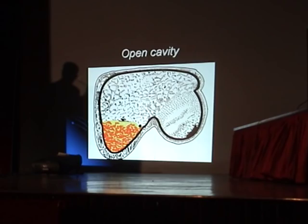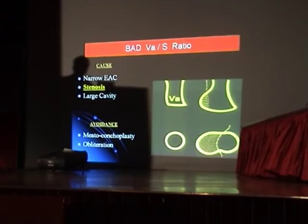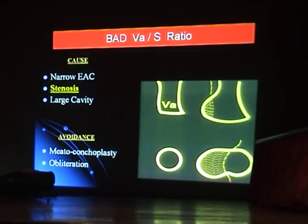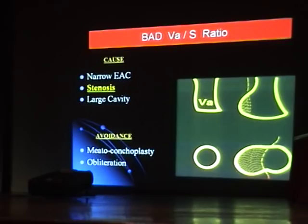Another thing not often taught is the VA upon S ratio — the volume of air circulating in the ear relative to the surface area of the ear canal skin. If there is meatostenosis, a meatoplasty or meatoconcoplasty is needed. For a huge cavity, muscle obliteration can be done, but it is not simple.